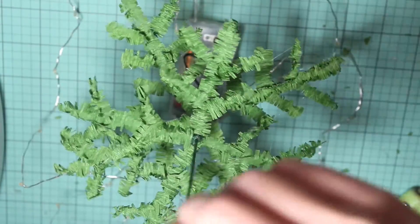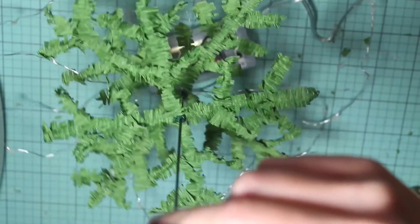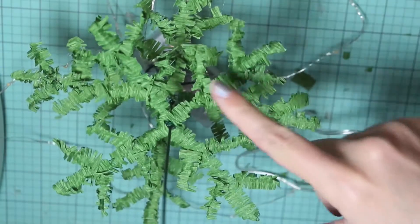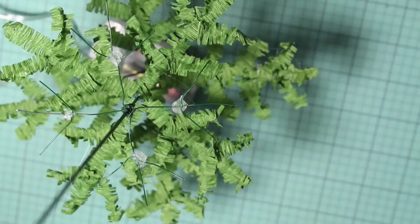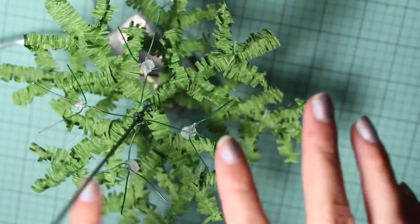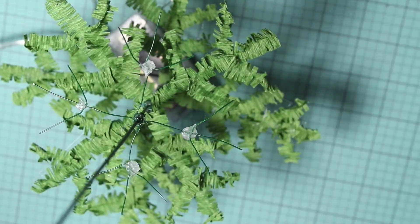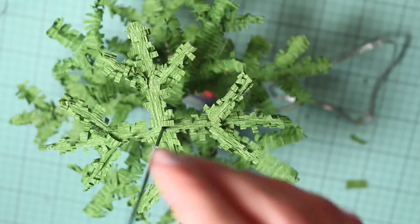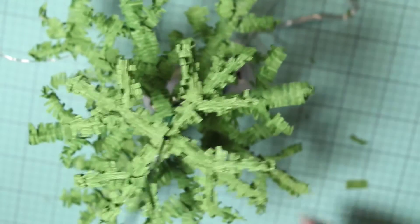I went ahead and covered those in crepe paper using the exact same process as before. Then I'm going to add another level, making the branches shorter, and this time only one V on each branch. Again, I'm placing these above where there's a space between the branches on the level below it, and covered those in crepe paper.